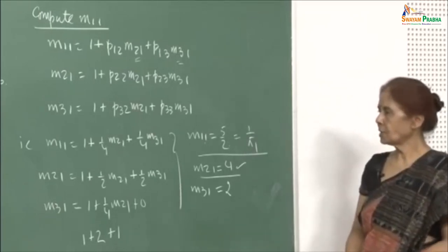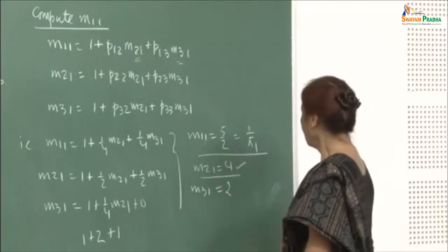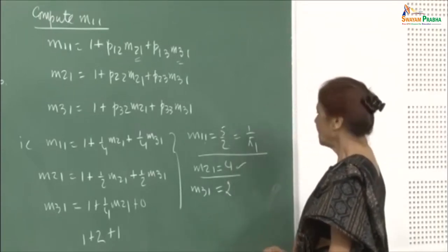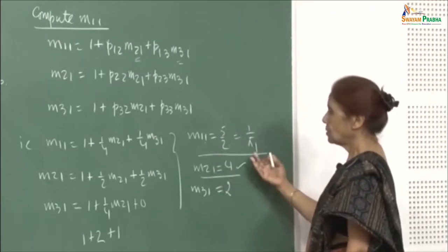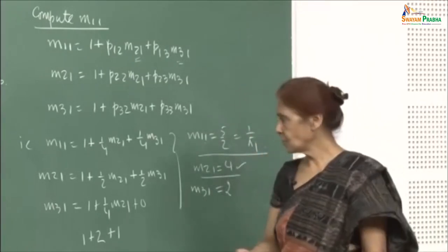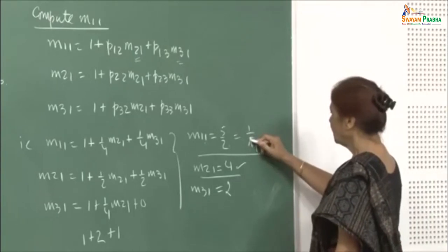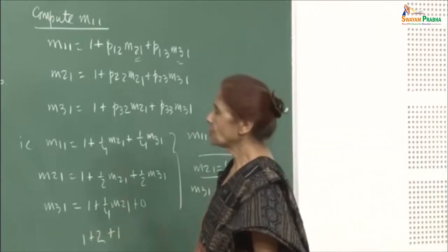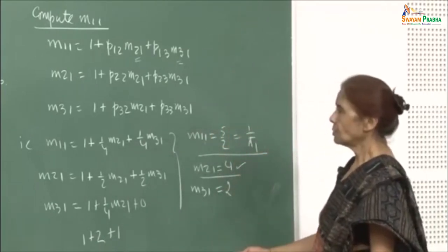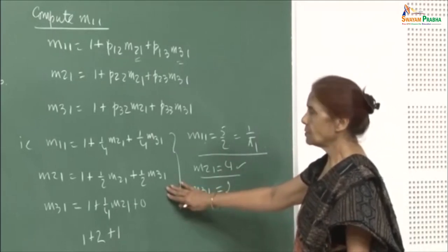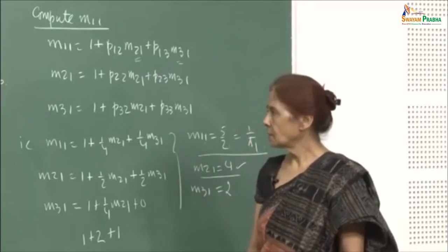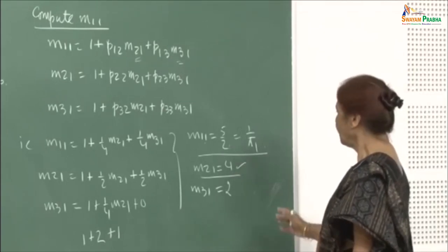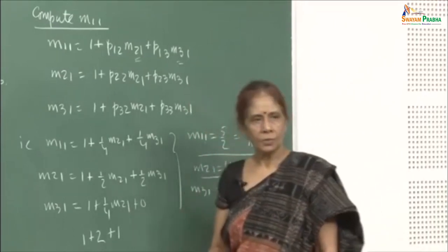Now we have to look at the conditions under which these computations are valid. As I had said, these may not even exist in some cases. Under certain conditions, which we will specify soon, these ways of calculating steady-state probabilities, mean first passage times, and mean recurrence times are valid. When they are not valid, we have other quantities to define those states.